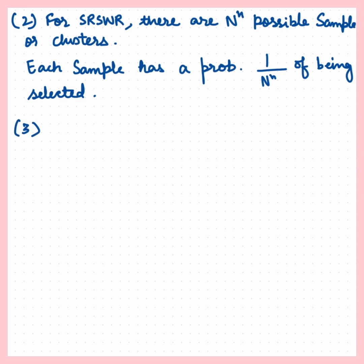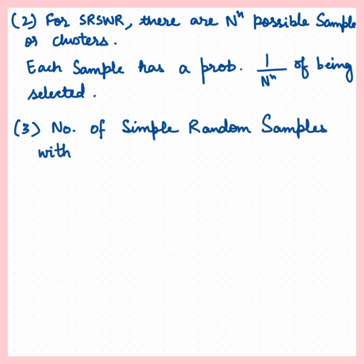Property three: total number of simple random samples with replacement, ignoring order, is (N + n - 1) choose n.